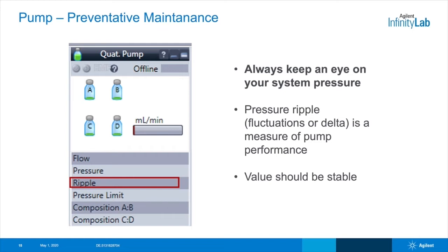If there is excessive pressure ripple, there may be an issue with the pump. A stable pressure ripple shouldn't be fluctuating wildly if you're pumping the same mobile phase composition on an equilibrated system. Looking at the behavior, whether it's rhythmic or erratic, and how large the fluctuation is, can be helpful. Note that on newer instruments, there may be alternative pump technology and diagnostic pump features that you would also need to monitor.